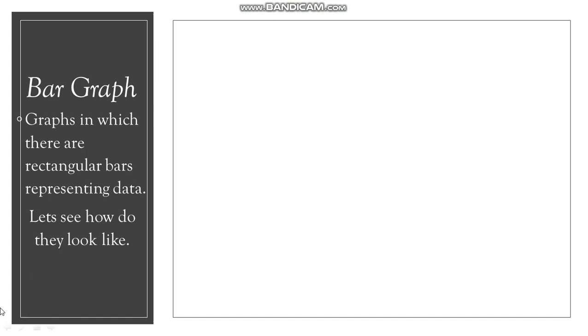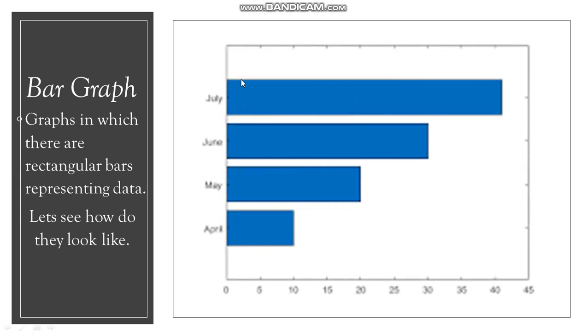Now let's come to the next one which is the bar graph. Graphs in which there are rectangular bars representing data. Let's see how they look like. You can see that here are the bars. I would like to also put a point here that column graphs are different and bar graphs are different. Bars are horizontal but column graphs are vertical.